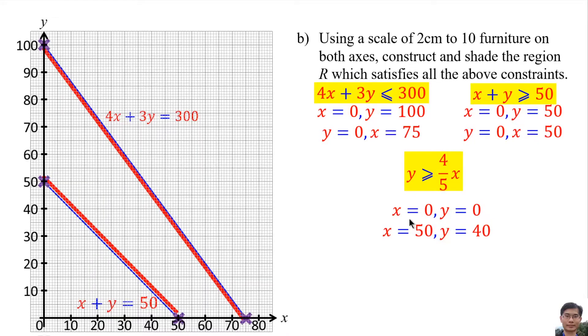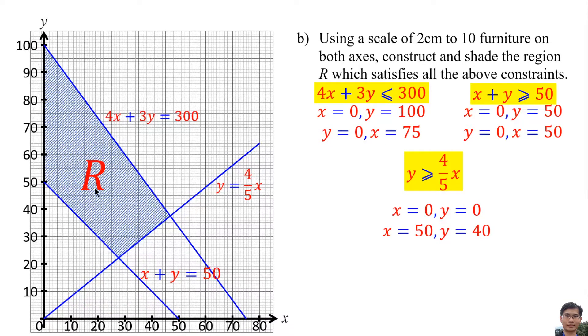After that, we plot this point, x 0, y 0, then x 50, y 40. Connect both points, so this line is y equals 4 over 5x. More than or equal means above this line. So the shaded region is here. Remember to label R.